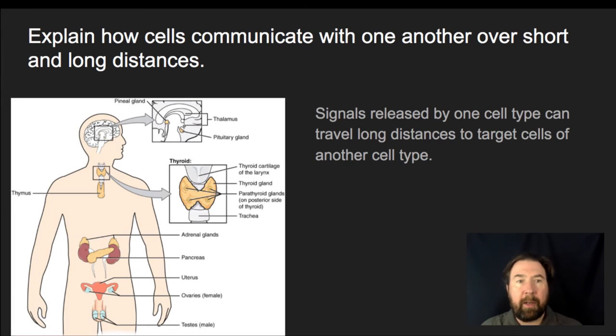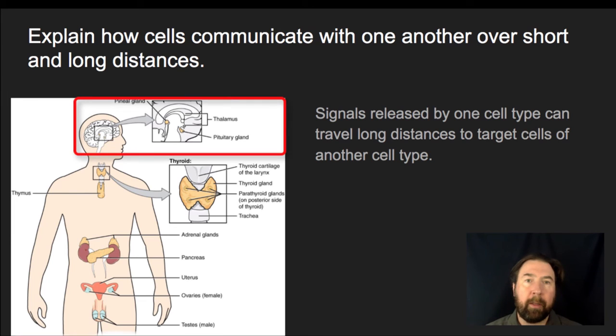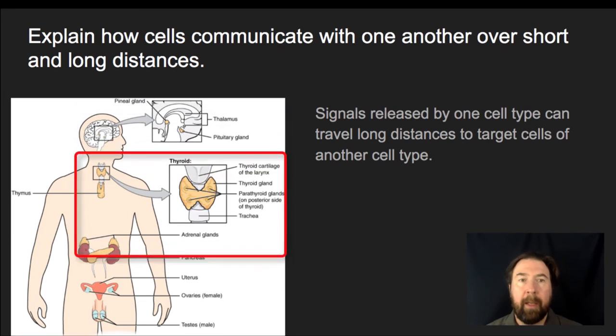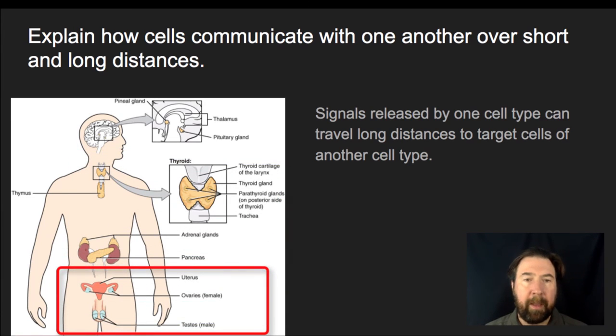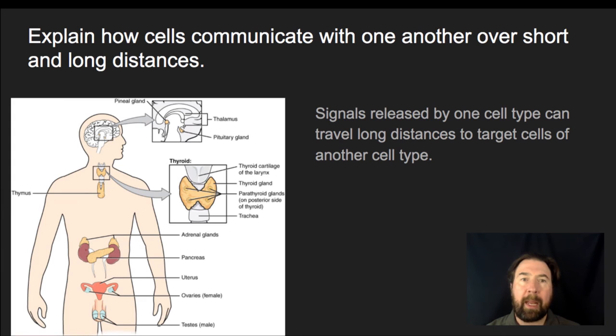Now, we recognize that there's a whole set of different endocrine glands that include what is shown on this diagram, the pineal gland, thalamus, pituitary, the thyroid, the parathyroid, the thymus, the adrenal glands, pancreas, the uterus, ovaries in females, and then the testes in males. These are just some of the endocrine glands that we recognize are ones that will release hormones and they will send signals out that will be received by target cells, ones that have receptors for the specific hormones that they release.